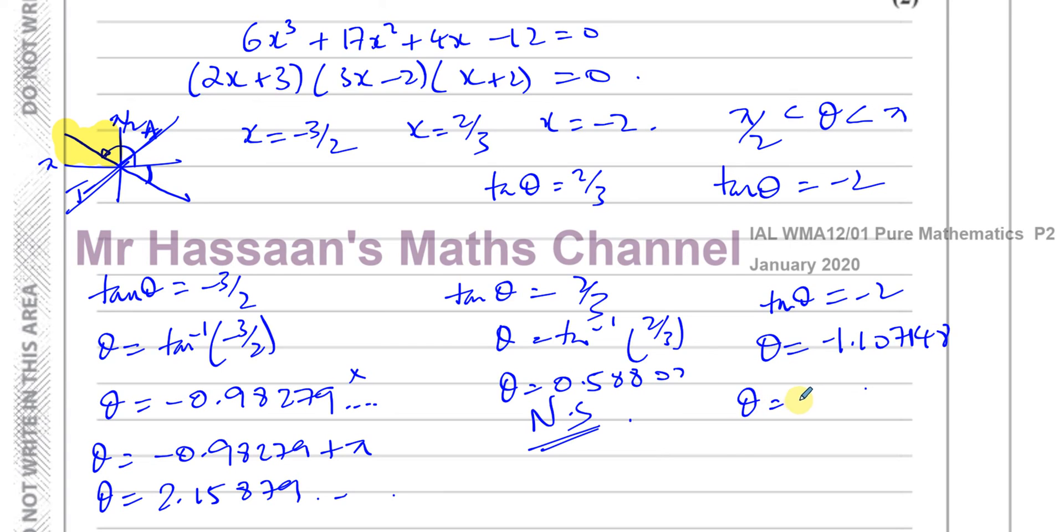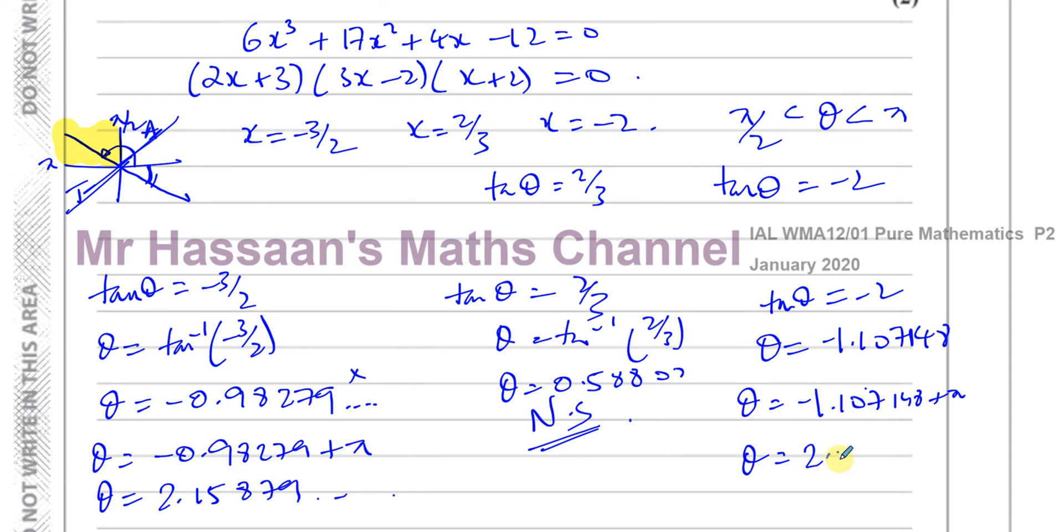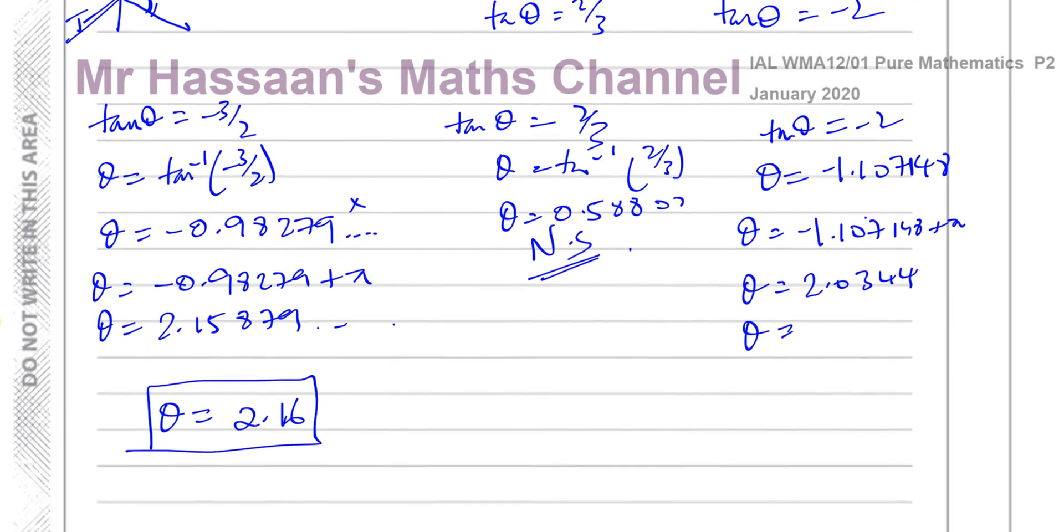So if we add pi to this, we do minus 1.107148 plus pi. It will give us an angle in this quadrant that we need. So we just take our answer and we add pi to it, so add pi equals, and we get 2.0344.